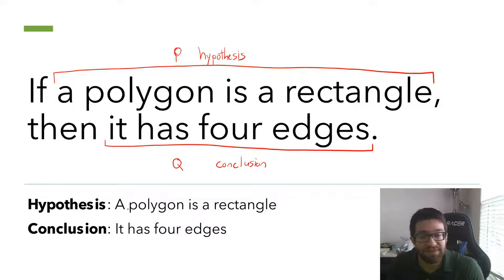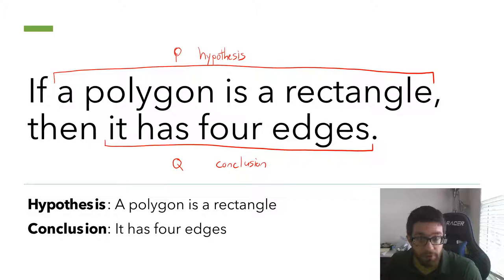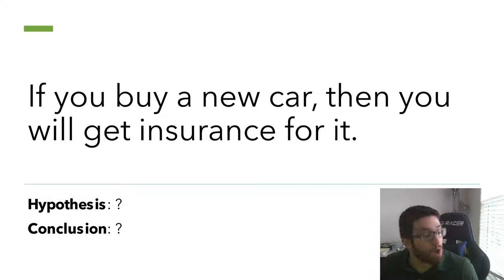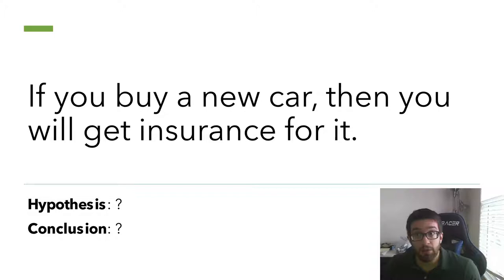Just like in algebra we use X and Y, in logic we use P and Q. The hypothesis is the stuff that comes after the if statement — you get rid of the word if. Likewise, we get rid of the word then when we write out the conclusion. In a second you're going to try this out on your own, so try to remember what's a hypothesis and what's a conclusion. If you're just watching on YouTube, pause the video and write down what you think the hypothesis and conclusion are. If you're doing this through Edpuzzle, it should prompt you at this point.